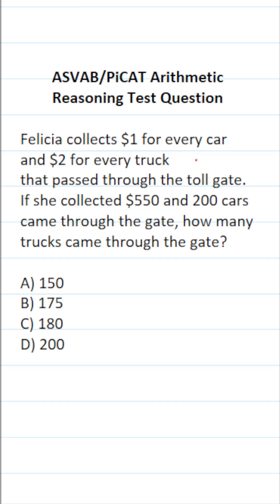In order to solve this one, we're going to translate these statements into an equation that we'll then solve. Let's start with this part right here: she collects $1 for every car that came through the toll gate. That's 1 times the number of cars that went through the gate. I'm going to let X represent the number of cars, so this becomes 1X.